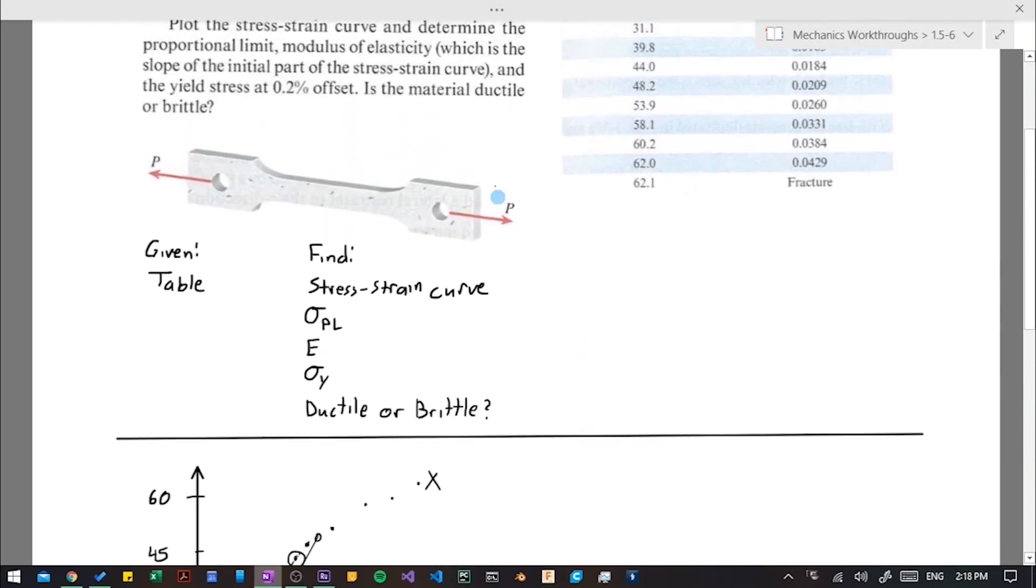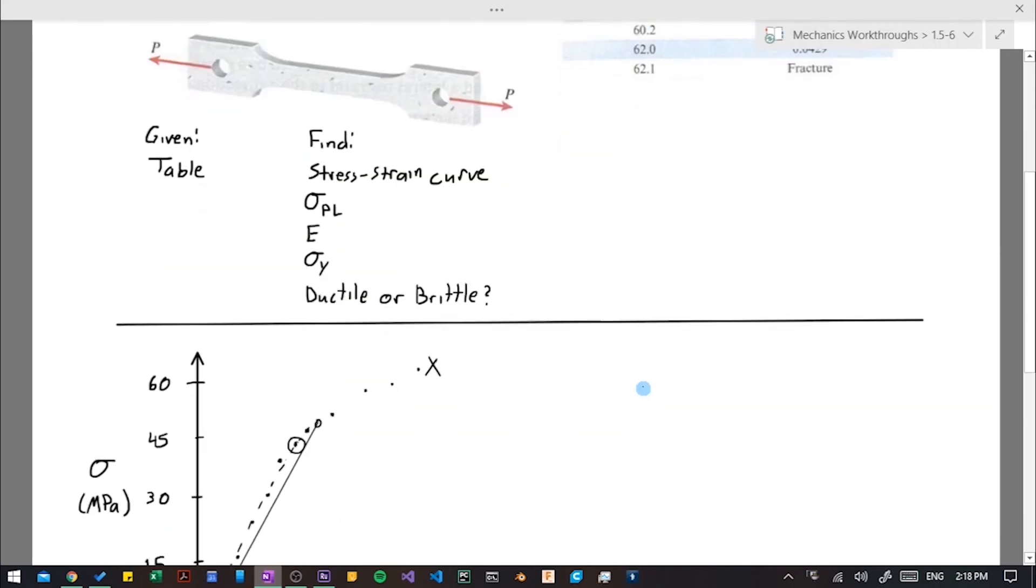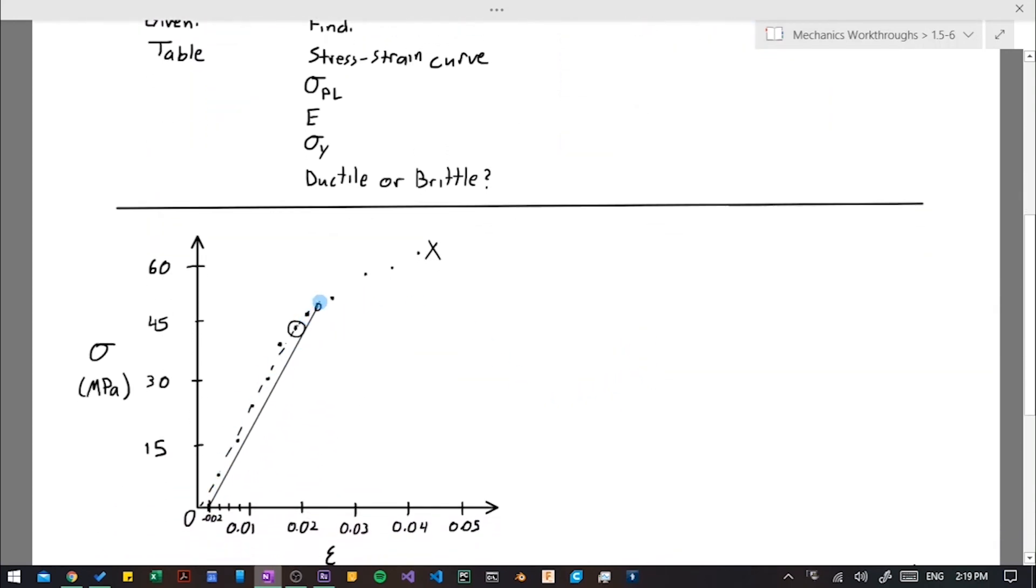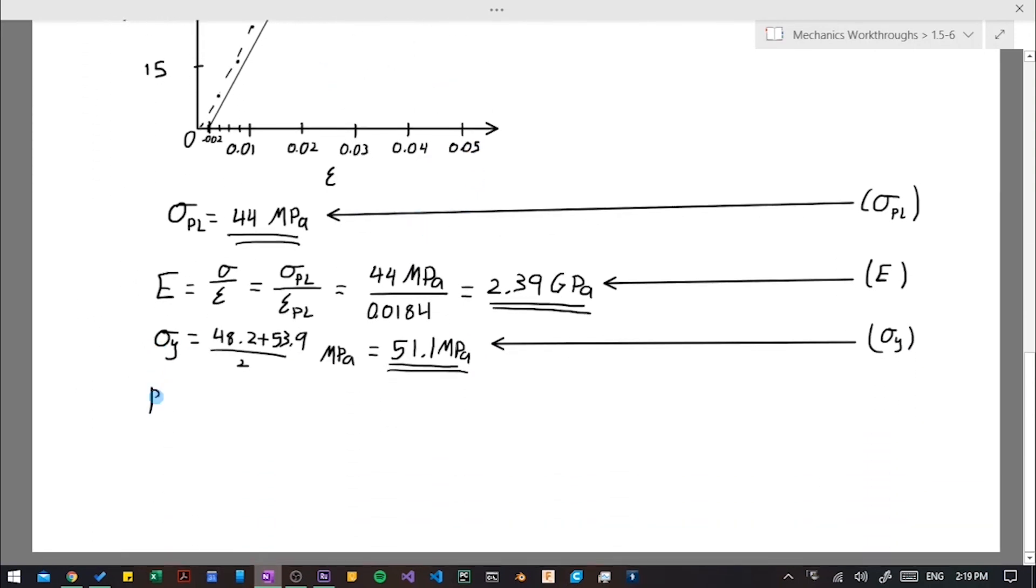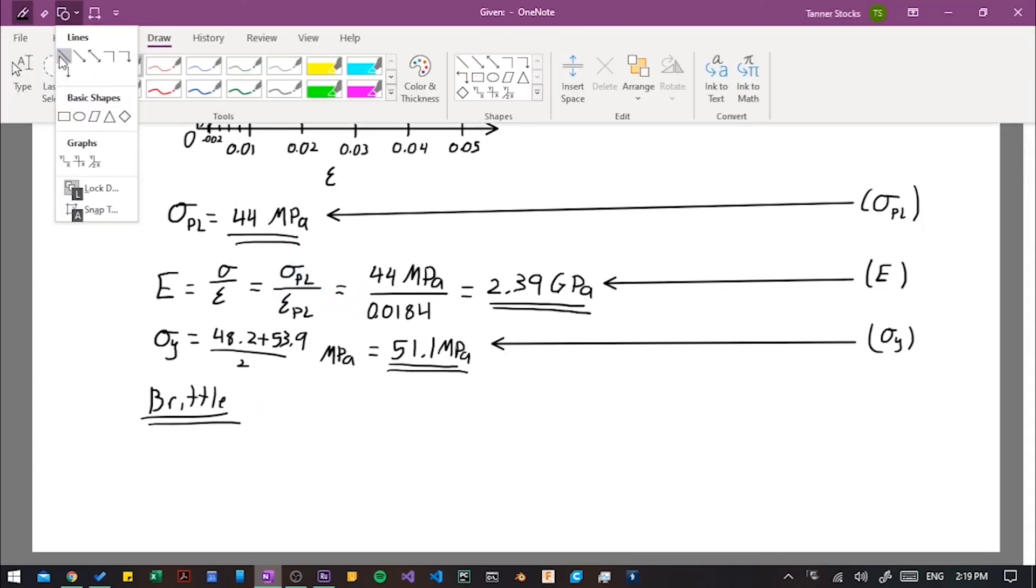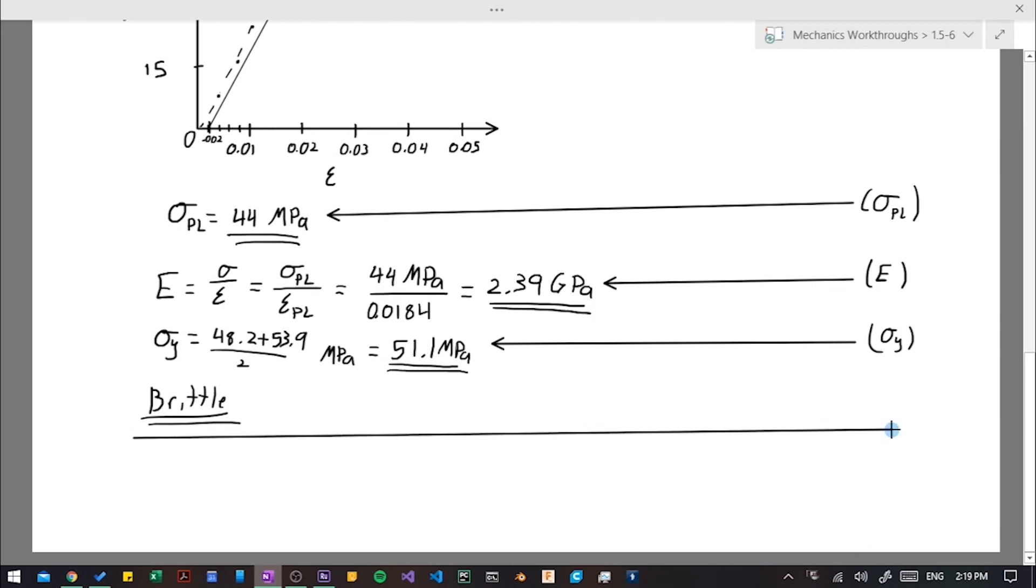And finally, we were asked to determine whether the material is ductile or brittle. And if we look at our stress strain curve, we can see that soon after it starts yielding, it breaks. So ductile materials will follow a curve that is more like this. And depending on how ductile it is, they can go pretty far before they actually break. So since we can see that this breaks so soon after yielding, we can determine that this is a brittle material. And that is our last answer. And so we are done with this problem.